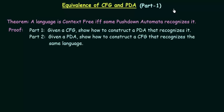In the last few lectures we have been studying about pushdown automata and we have seen how pushdown automata actually works with the help of examples. Now in this lecture we will be studying about the equivalence of context free grammar and pushdown automata. There is a theorem which says that a language is context free if and only if some pushdown automata recognizes it. The language generated by context free grammars and the language accepted by pushdown automata are actually the same class of languages.